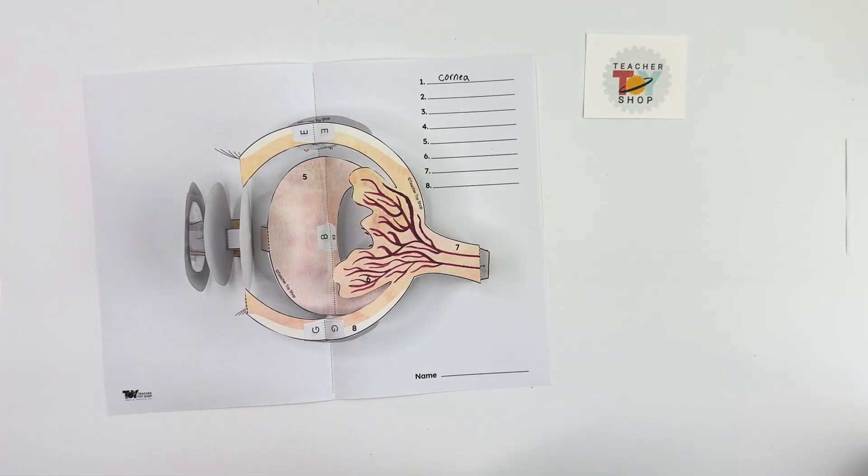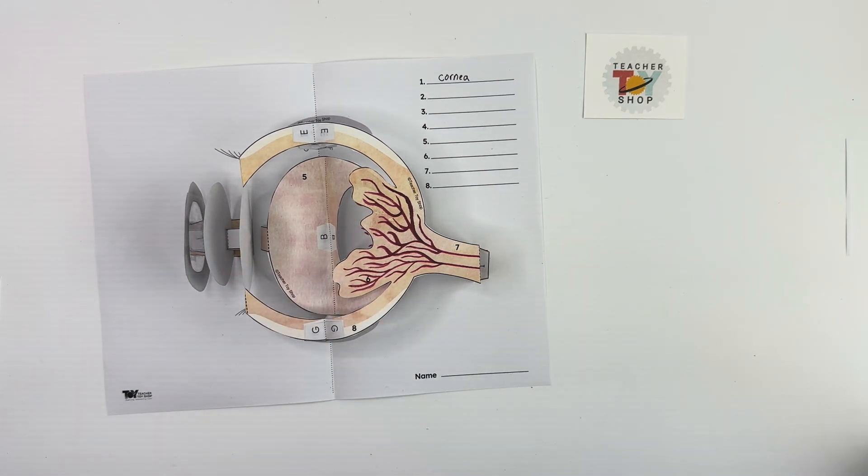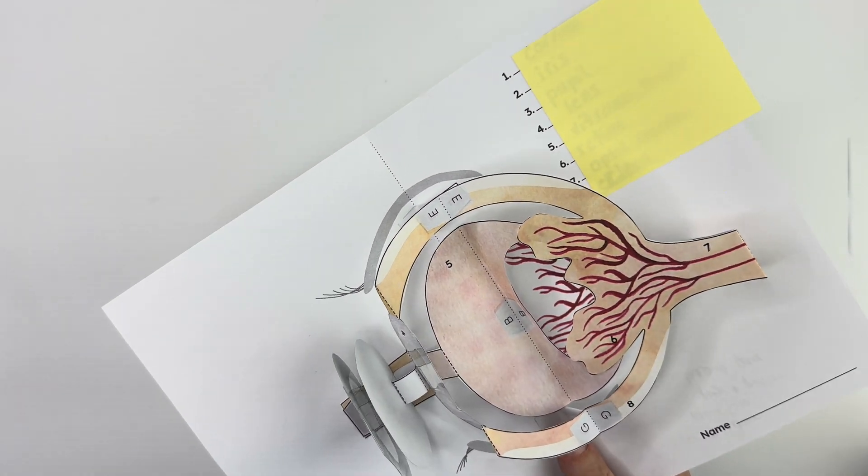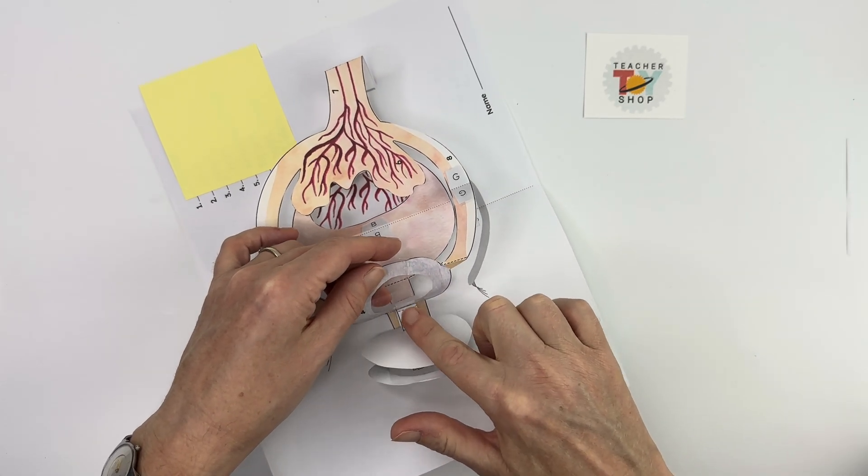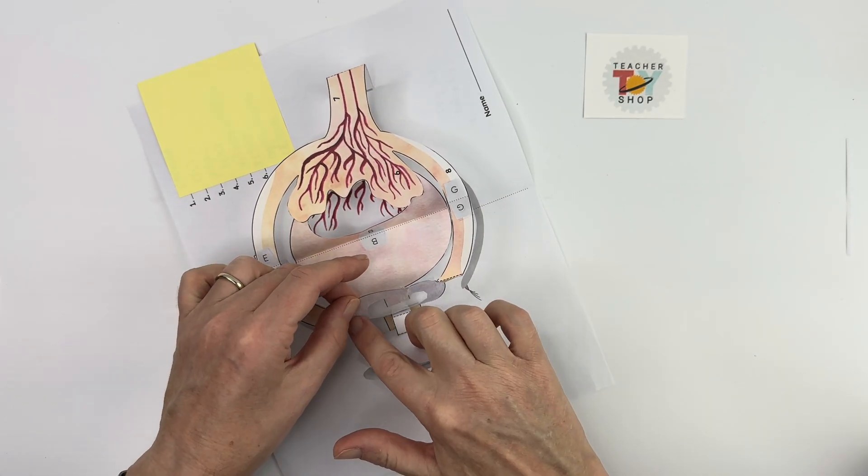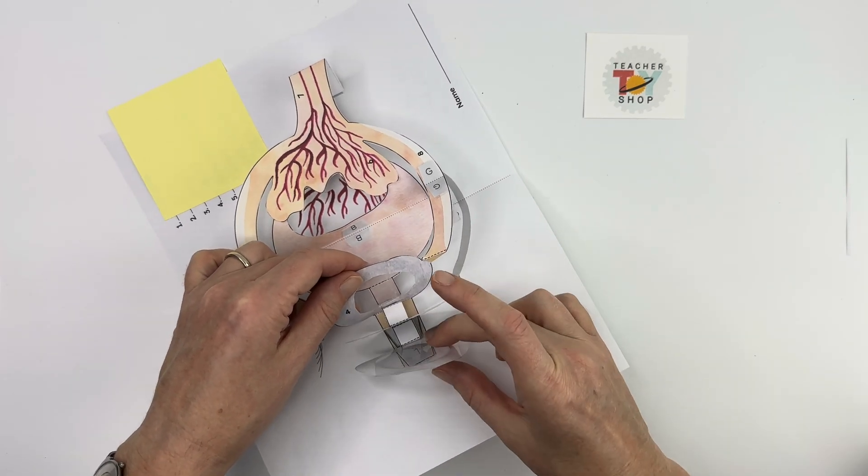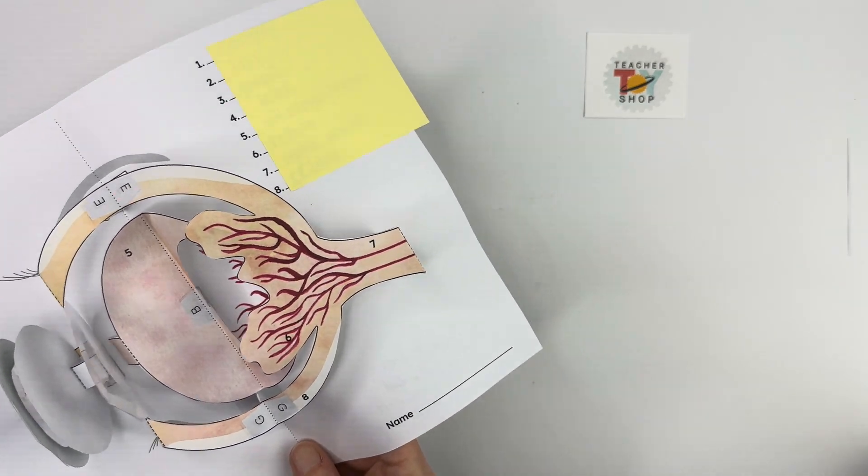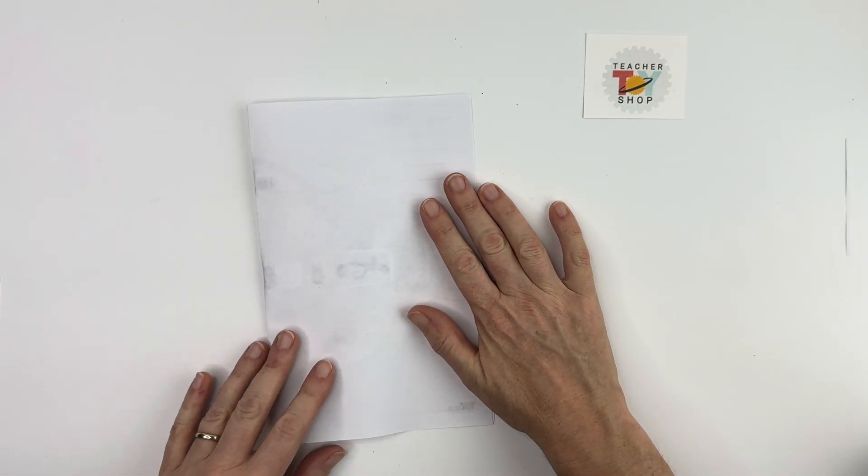One little thing that you can do is many of you may know that the lens is clear as well so if you wanted you actually can put a hole in the lens if you like. I didn't do a great job here but you can do that as well. I had colored it to try to make it look clear but you can actually cut out a hole similar to what you've done with the cornea and do the same thing if that appeals to you. So that's definitely something that you can do.